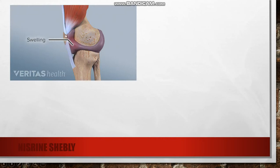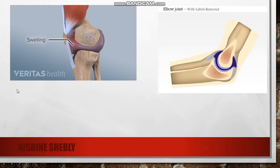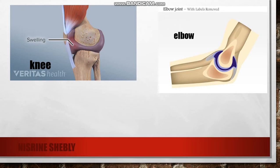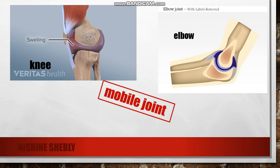And now the elbow joint and the knee joint. I can move the knee and my arm in one direction. It's a mobile joint.